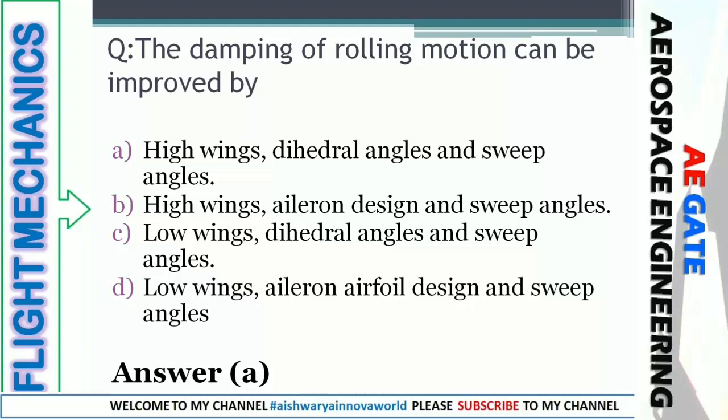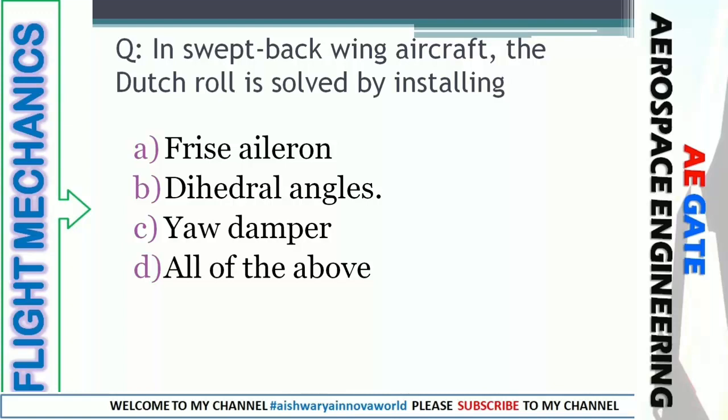In a swept-back aircraft, the Dutch roll is solved by installing: phrase aileron, dihedral angle, yaw damper, or all of that. There is only one way to recover from Dutch roll — it is the yaw damper. That is option C.